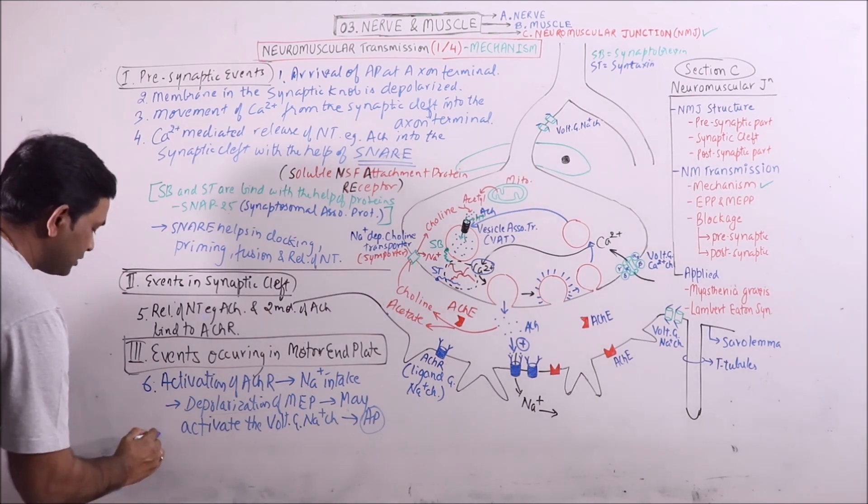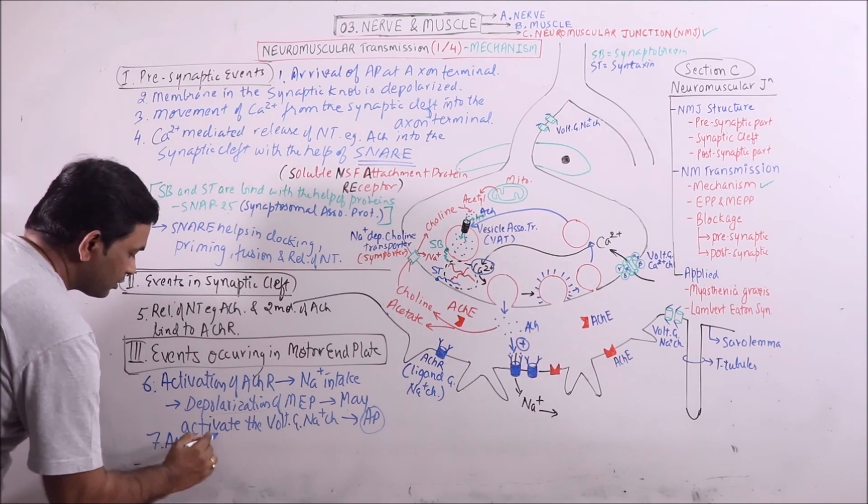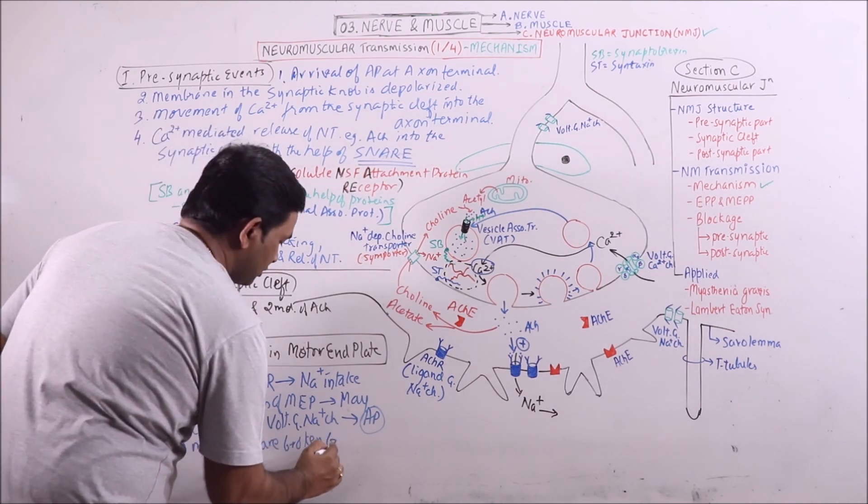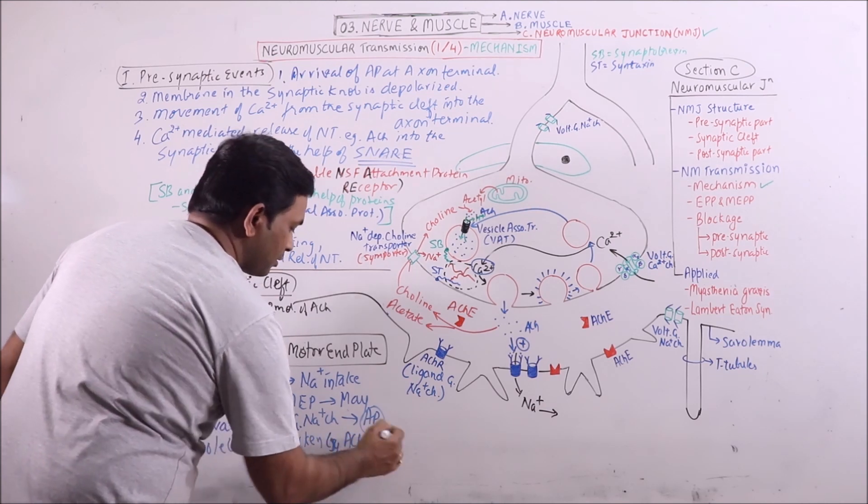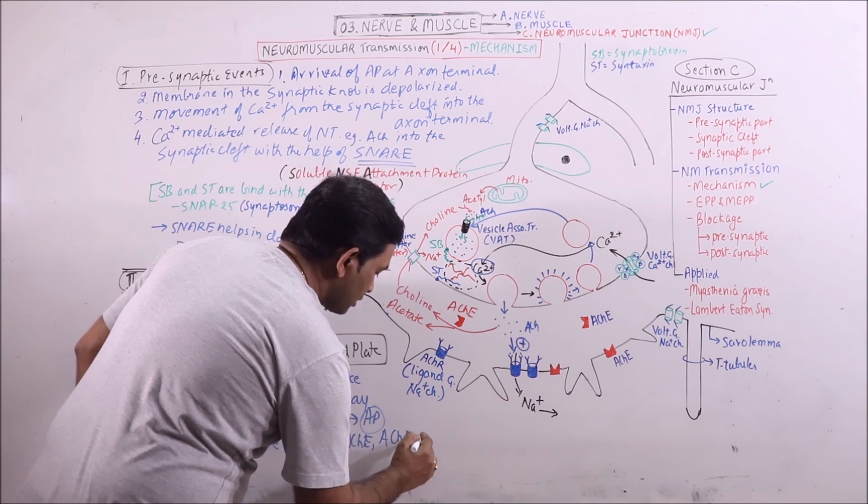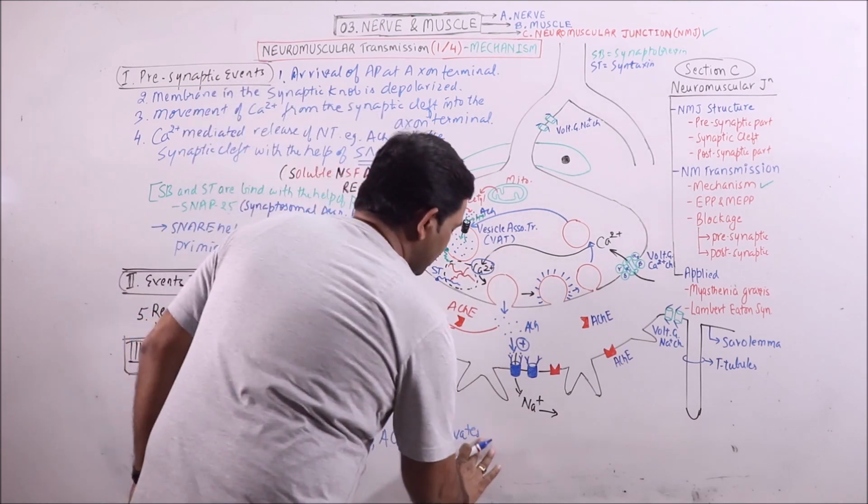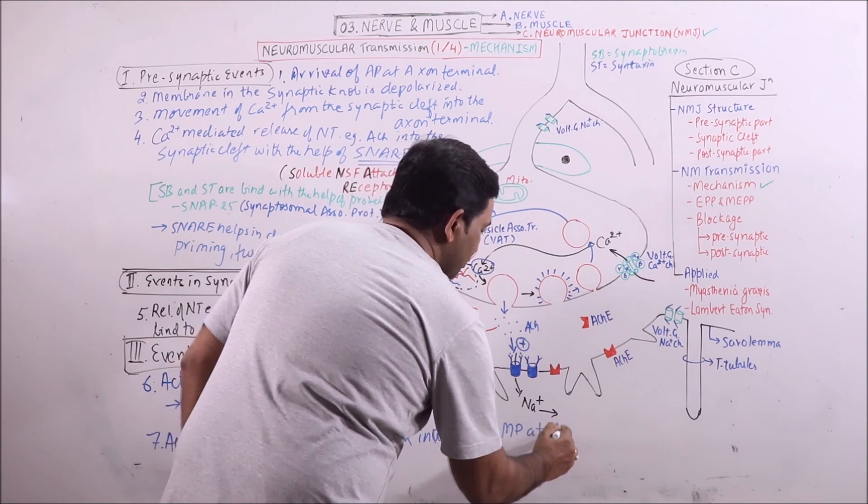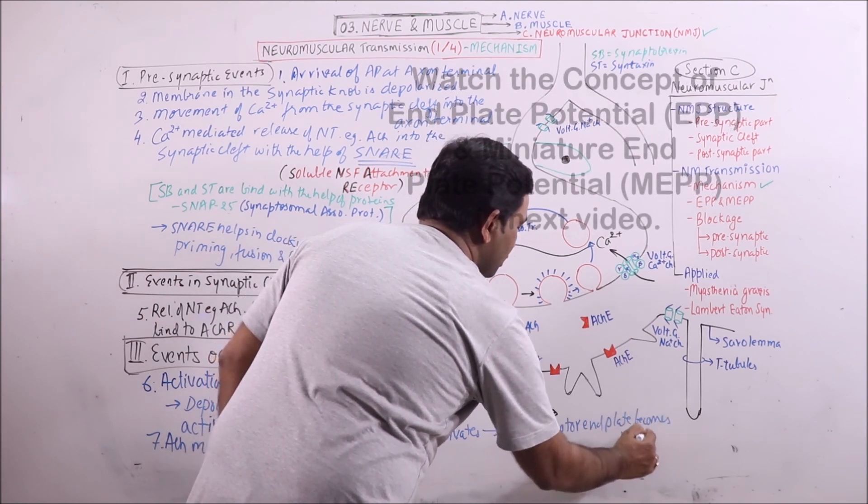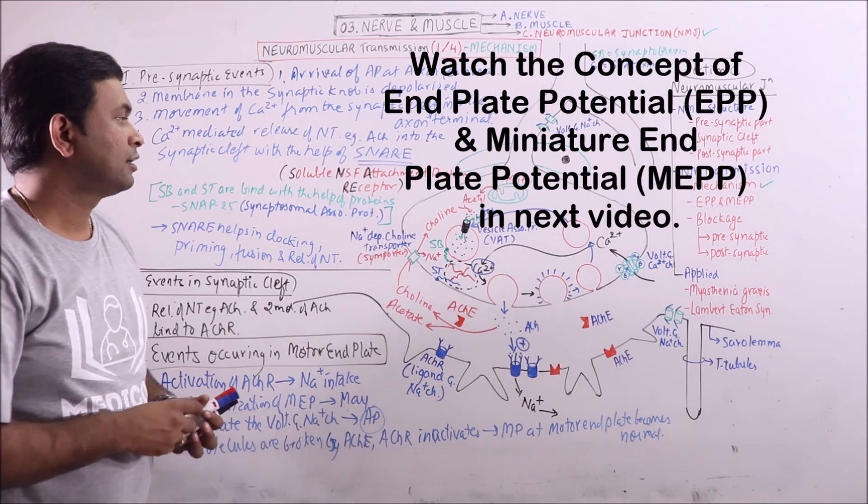As the ACH molecules are broken by ACHE, ACHR inactivates and the membrane potential at motor end plate becomes normal. These are the various events occurring in the neuromuscular transmission.